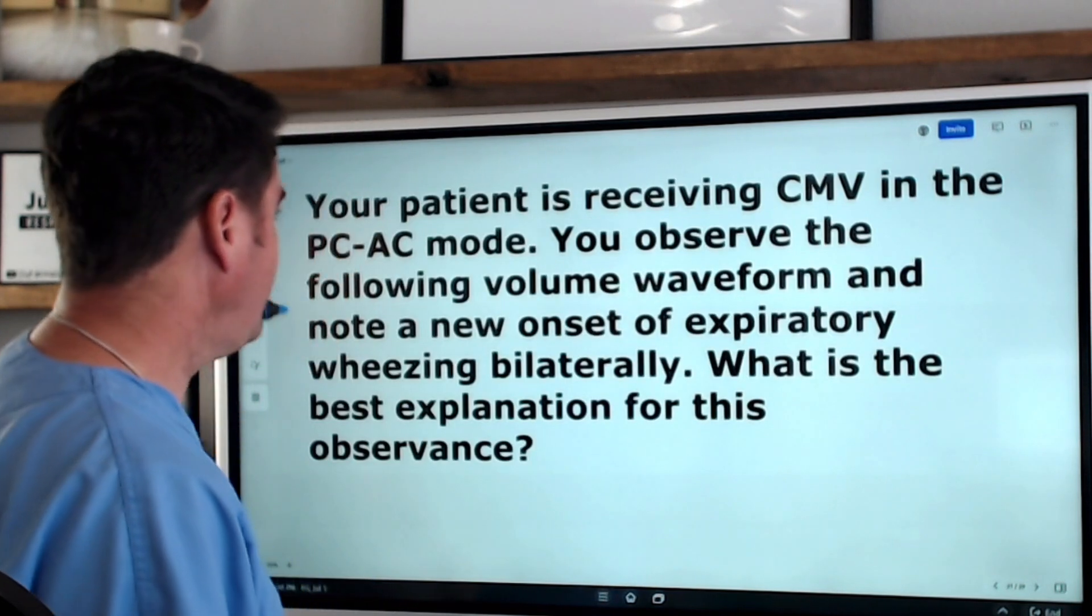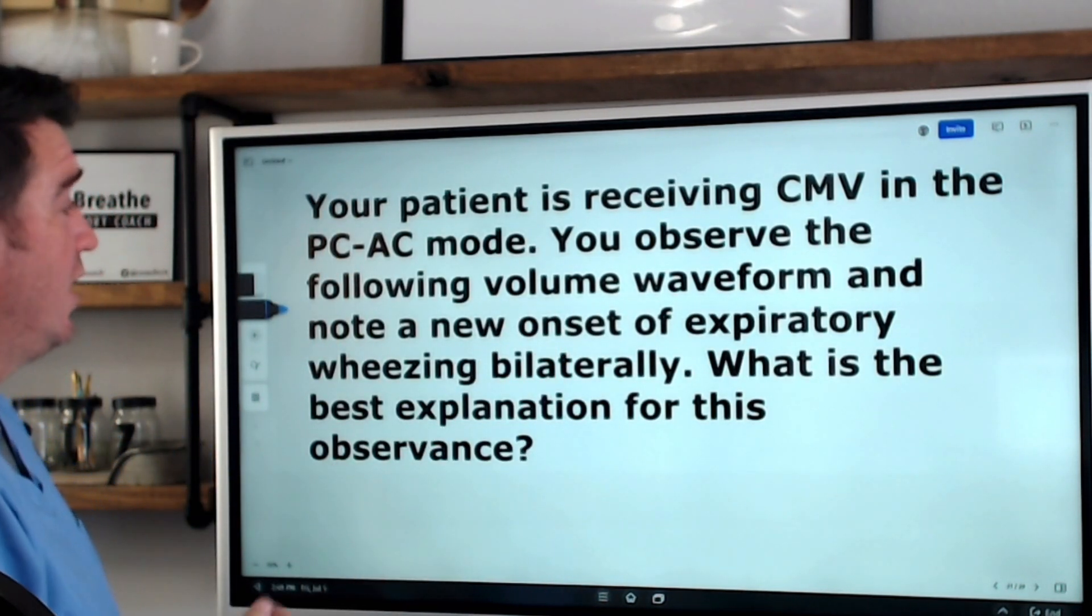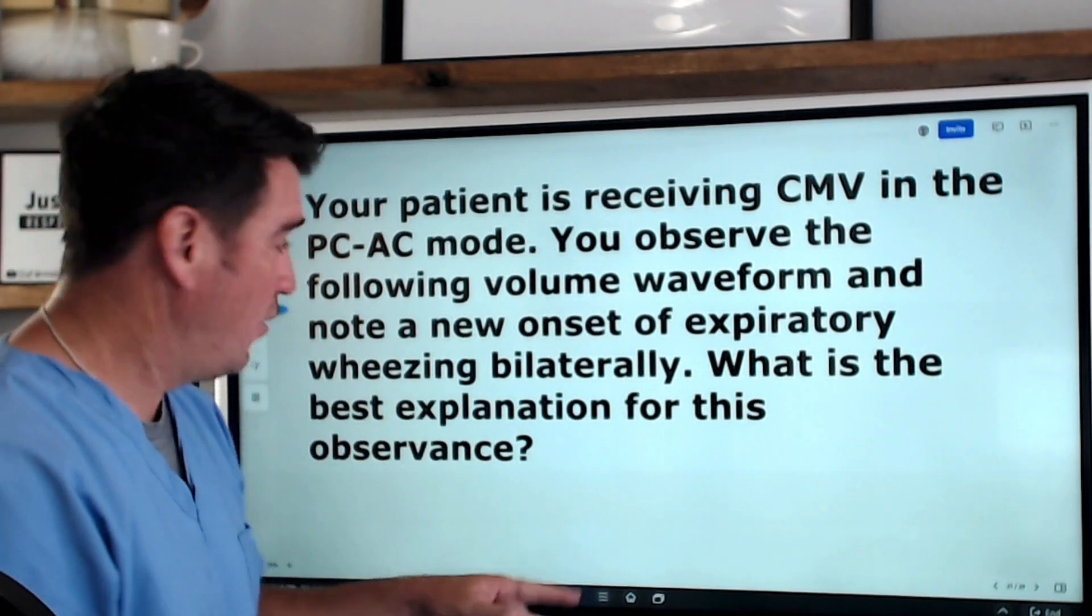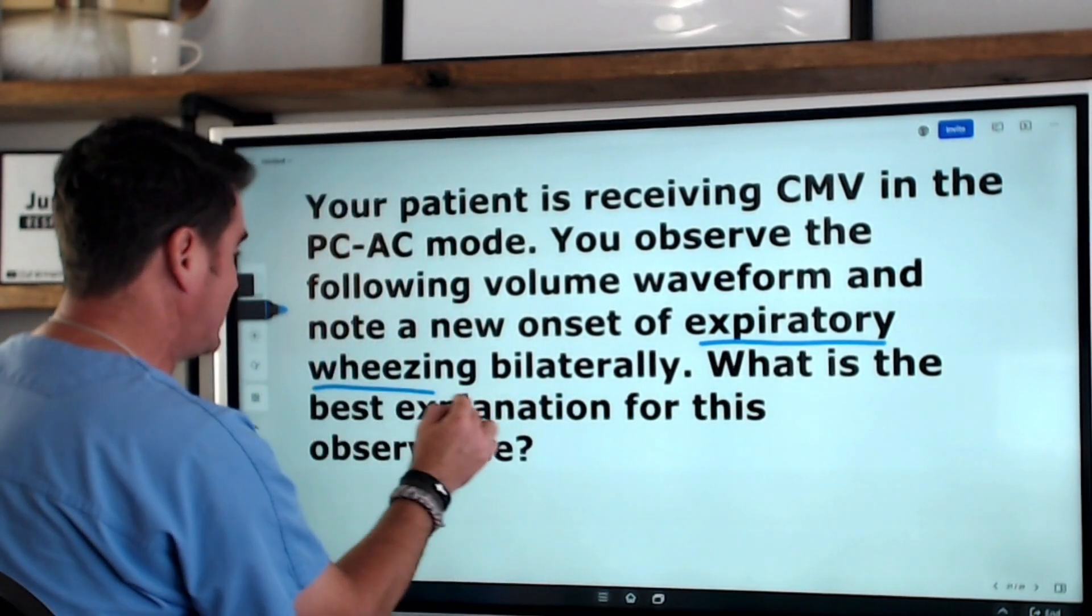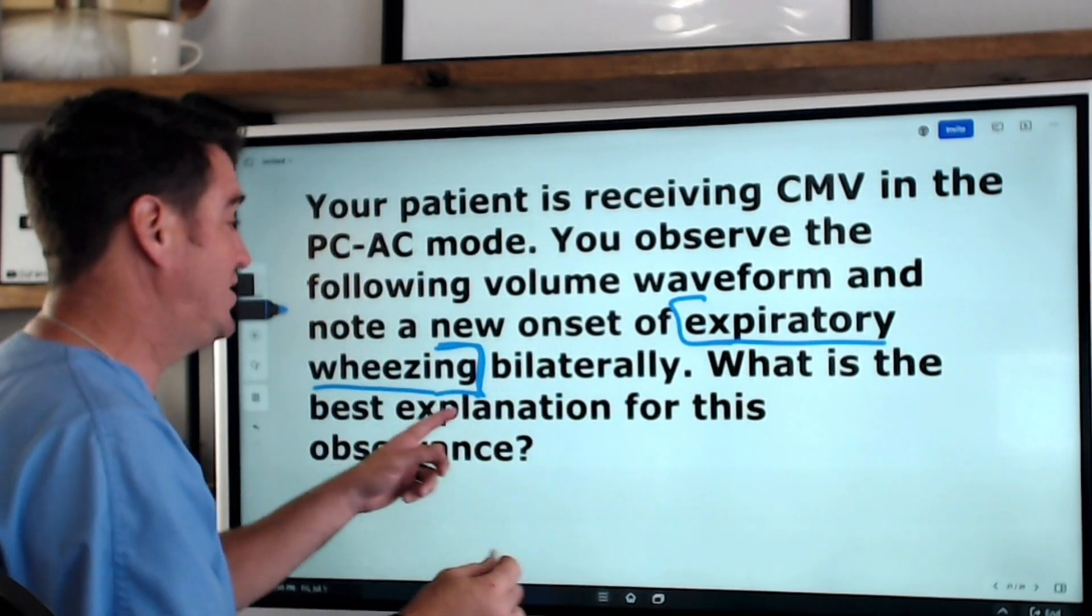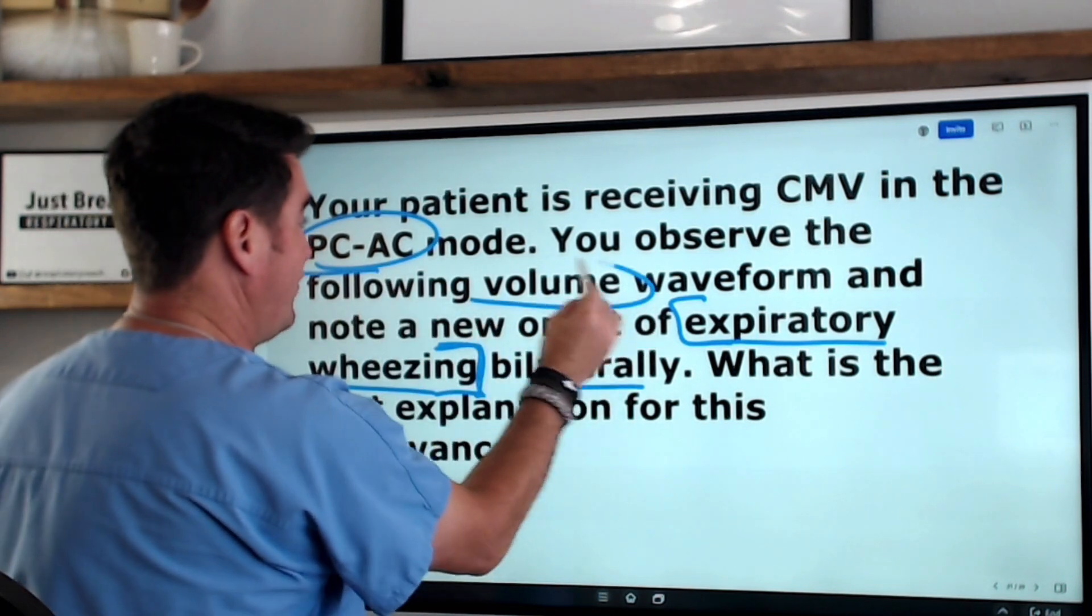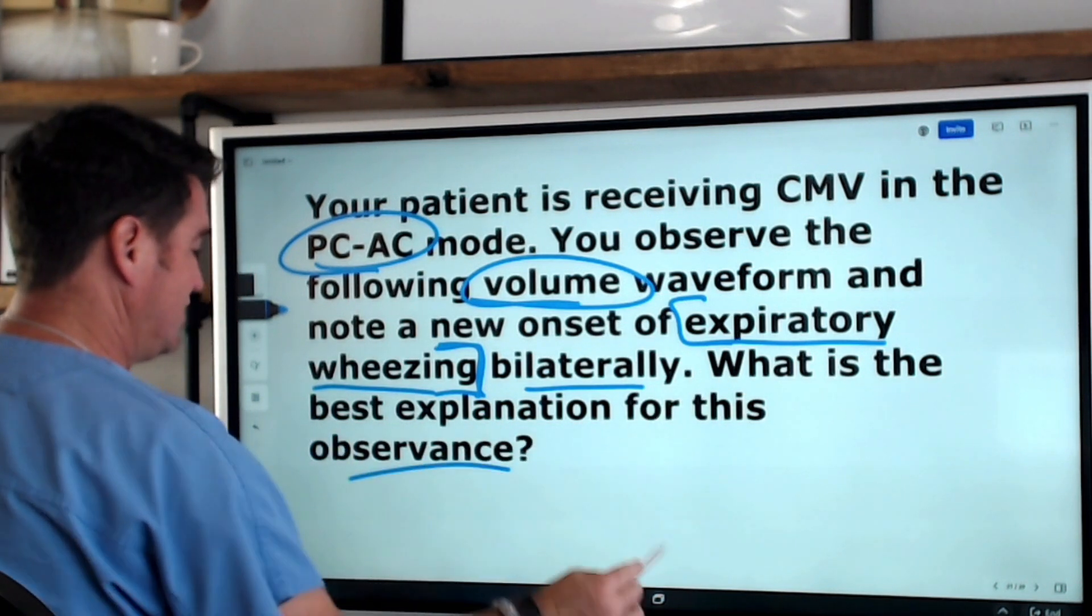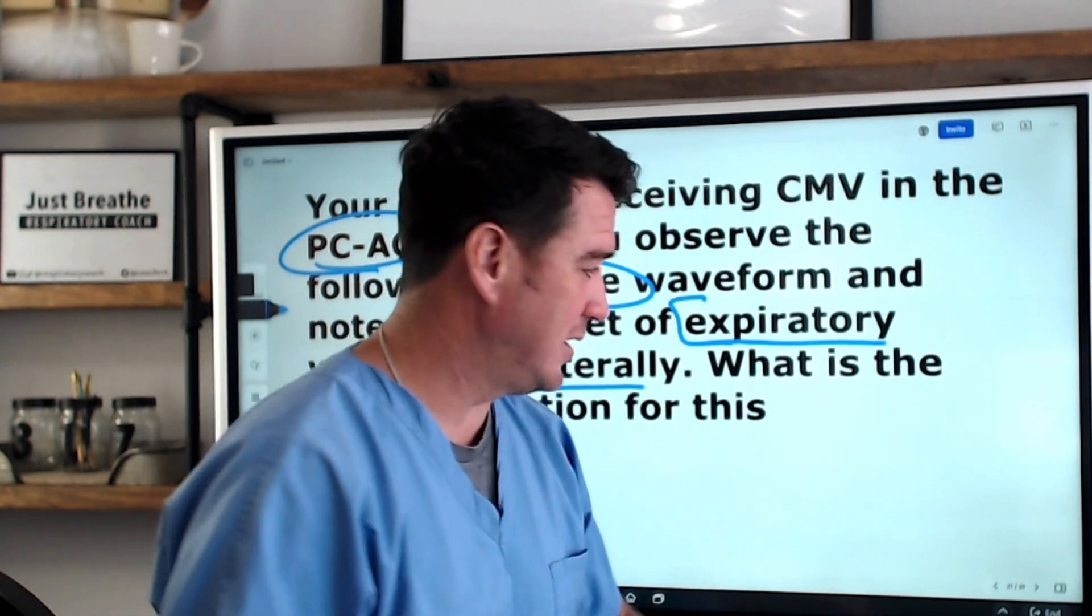One more question for you. Your patient is receiving CMV in the pressure control assist control mode. You observe the following volume waveform and we note a new onset of expiratory wheezing. We just got more information this time. We got more information and it's happening bilaterally. Pressure control, look at the volume waveform, expiratory wheezing, what is the best explanation of this? Let's see what it looks like.